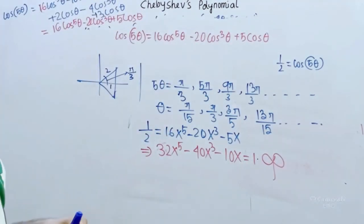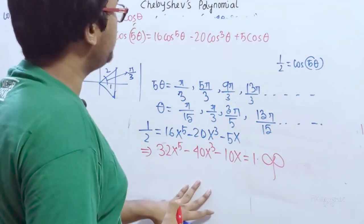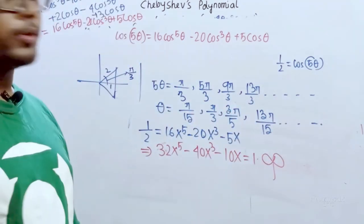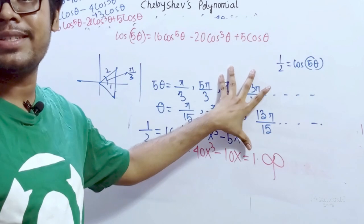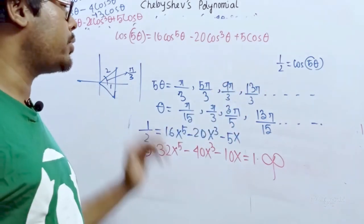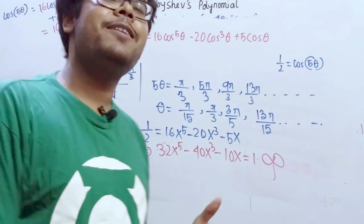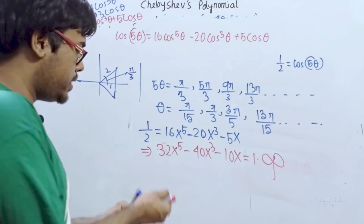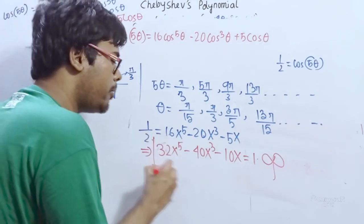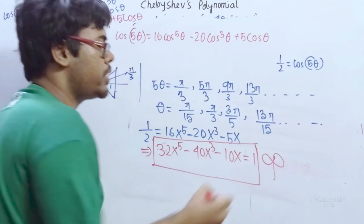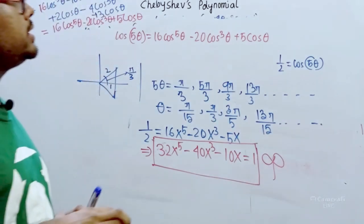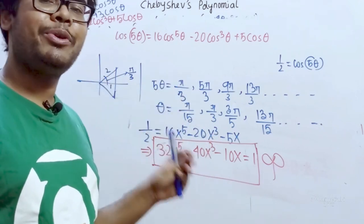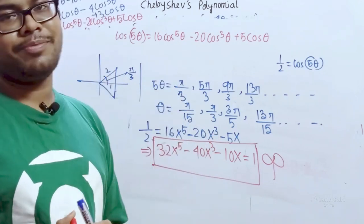So there you go — this is the Chebyshev polynomial. We can simplify it as 32x⁵ - 40x³ + 10x = 1. This is the equation we were looking for, and this is the beauty of mathematics — we can derive such a beautiful polynomial equation directly from trigonometry. You can use Chebyshev's polynomial in so many ways.